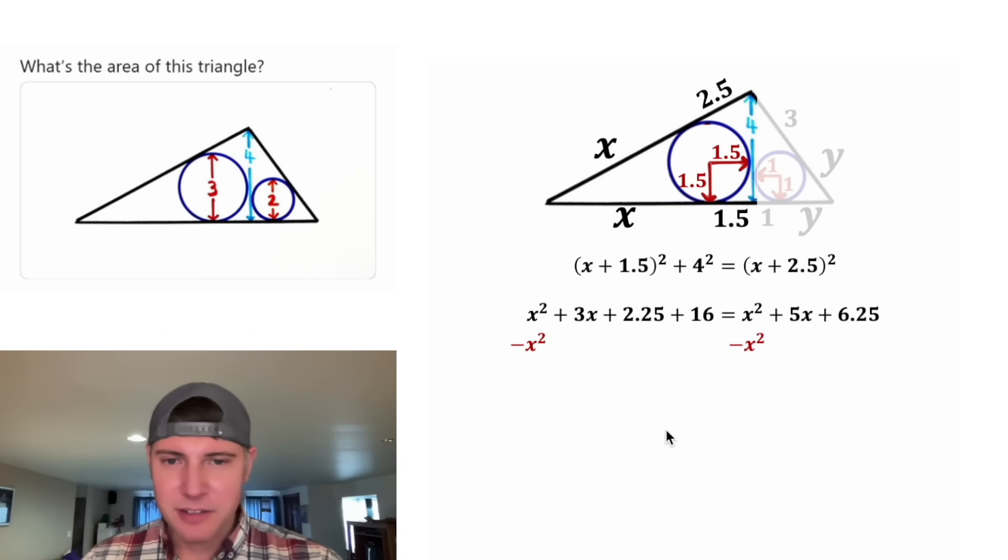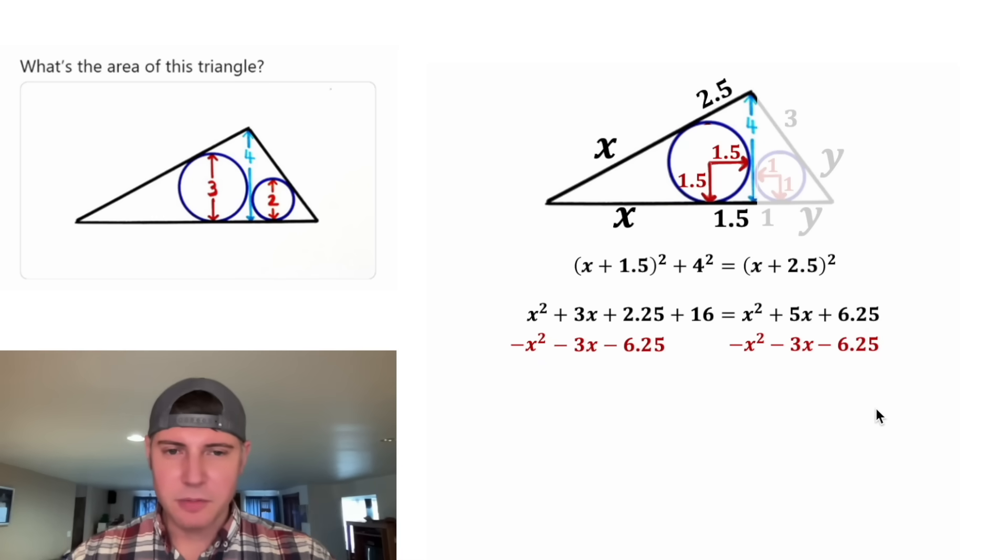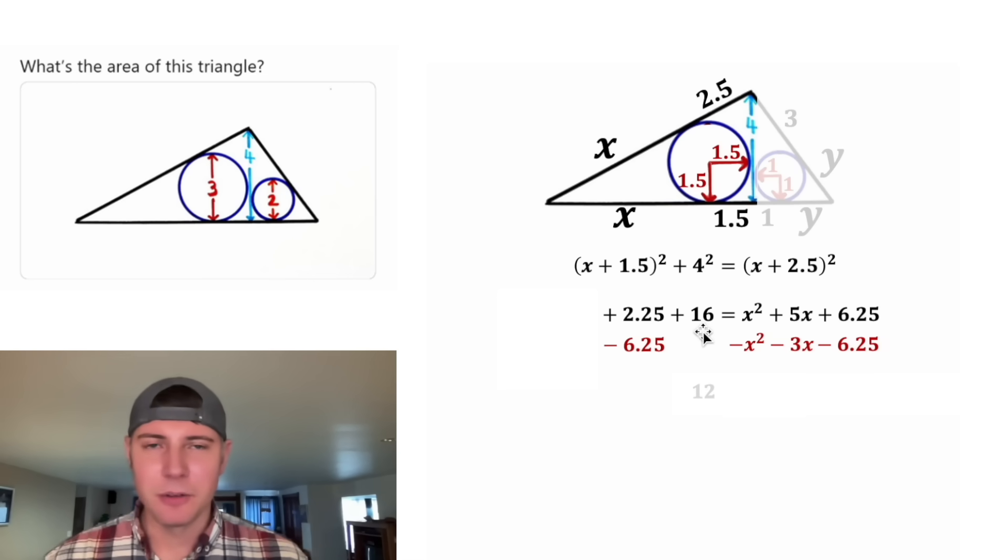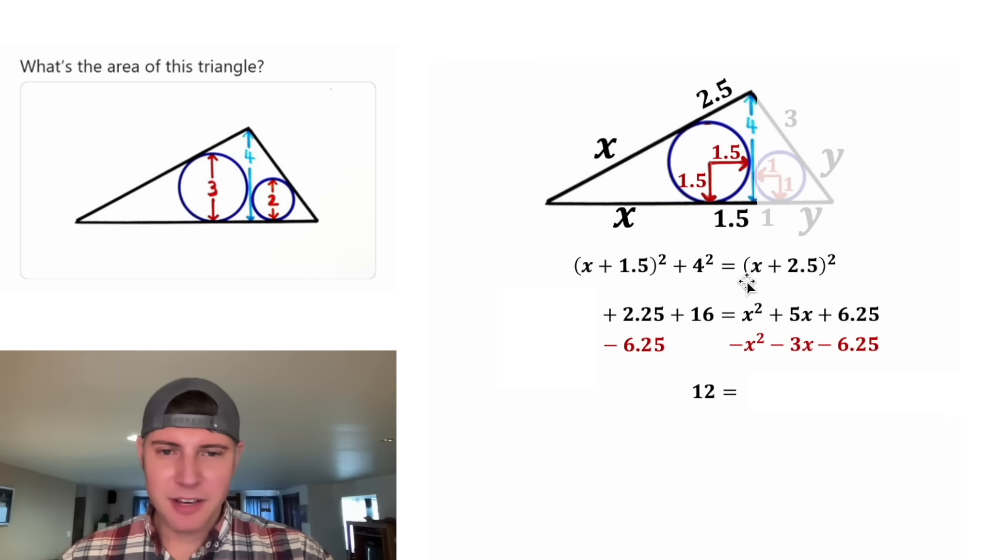And then we have a 3x and a 5x. Let's subtract the smaller one, 3x, from both sides. Let's get rid of the 6.25 from this side. Let's subtract 6.25 from both sides. On the left-hand side, this stuff all cancels. And 2.25 plus 16 minus 6.25 is equal to 12. And then on the right-hand side, this stuff cancels and this stuff cancels. And 5x minus 3x is 2x.